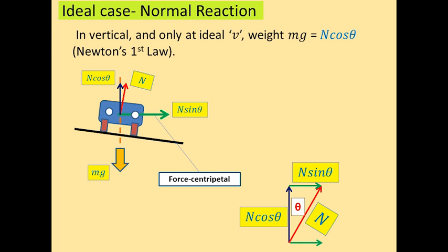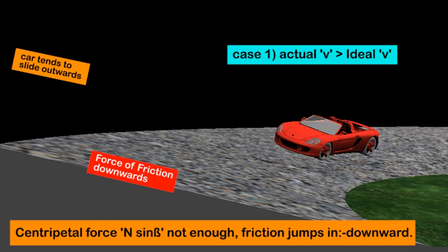Now let us match up the free body diagram for the vertical direction. In the vertical direction, the only force acting upwards is N cos theta. The only force acting downwards is Mg. Therefore, Mg is equal to N cos theta. And you can also see the triangle below that shows the resolution.